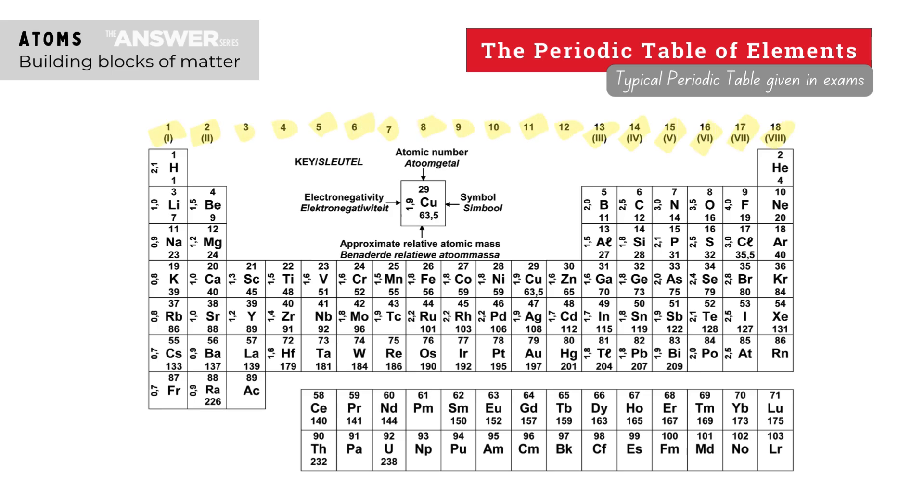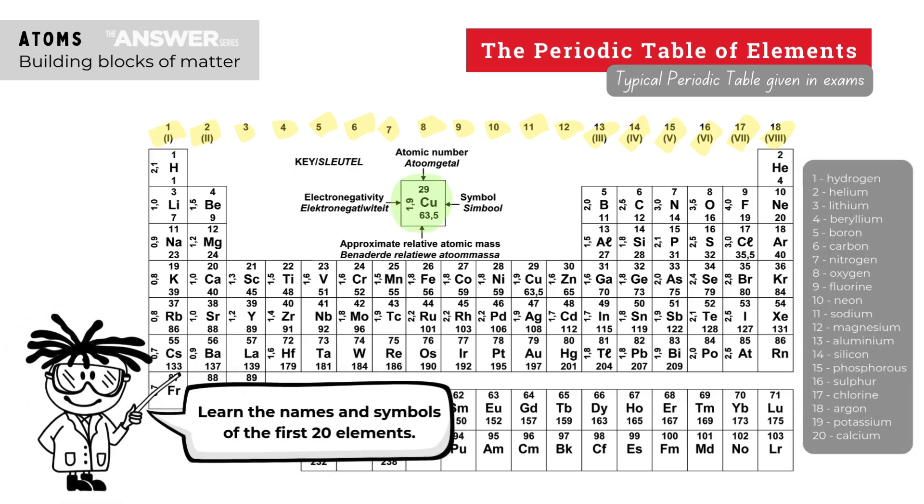So here's a typical example of a periodic table you can expect in an exam. Notice that the group numbers are given, some are given as Roman numerals too, no element names appear with the chemical symbols so you need to learn those names, and the position of the metals, semi-metals, and non-metals is not indicated.